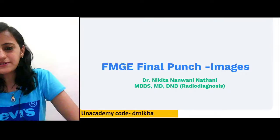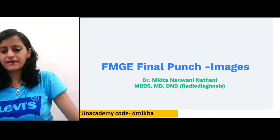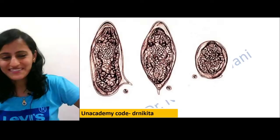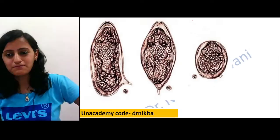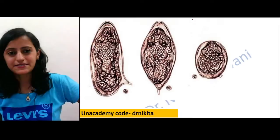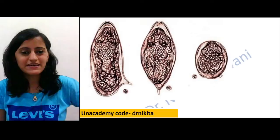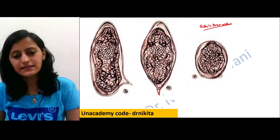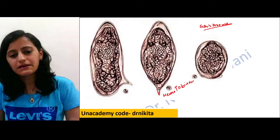Let's start with the images. First, identifying parasitology eggs — very, very important. The first image shows eggs of Schistosoma. Now Schistosoma haematobium is the one where you see the terminal spine. Remember: H for haematobium, T for terminal spine.